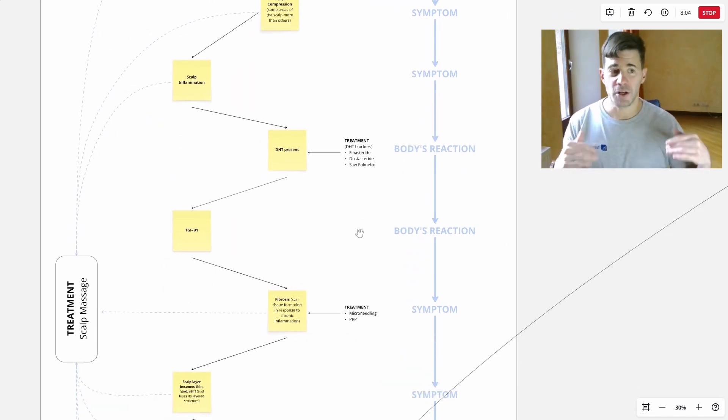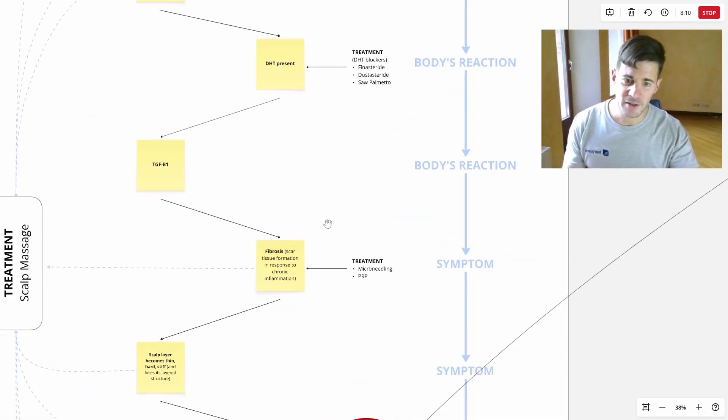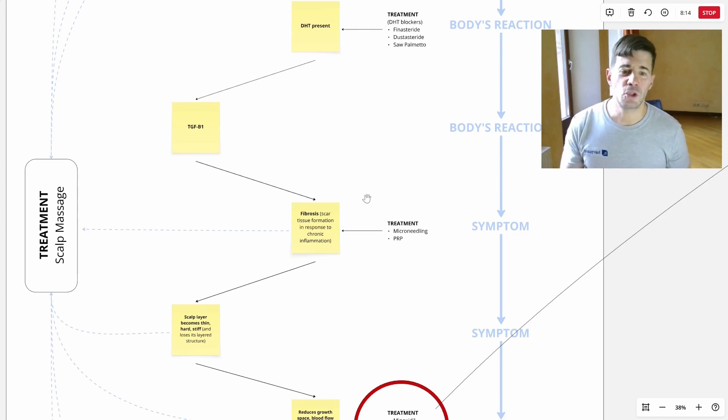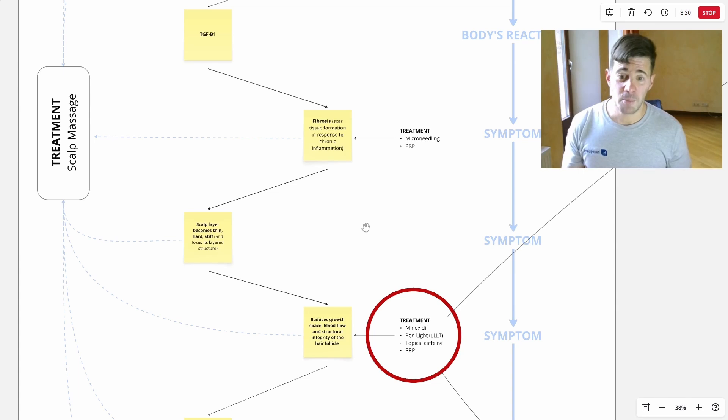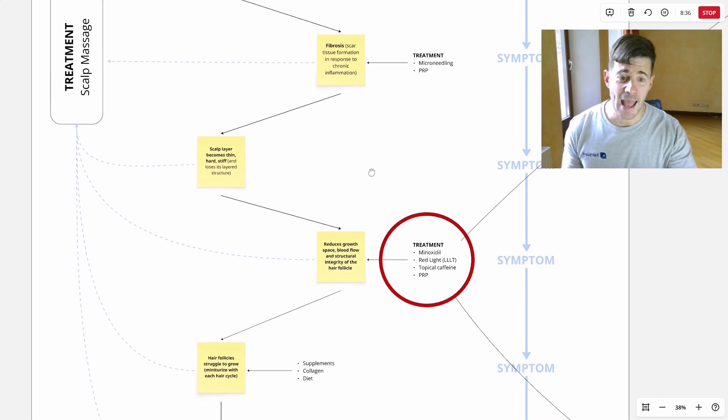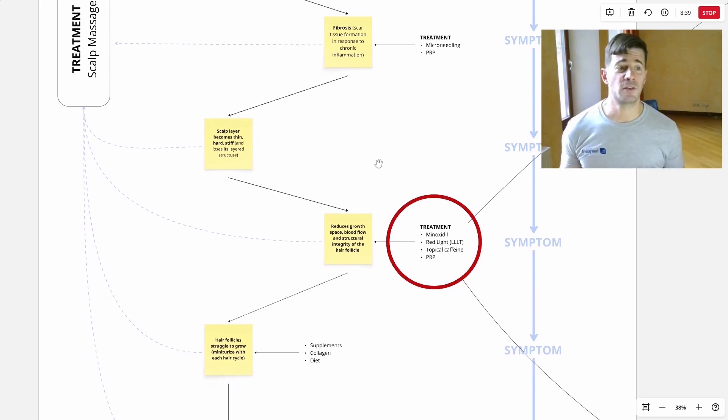And this inflammation in turn triggers, activates, hyperactivates the DHT. Then the DHT triggers another protein called transforming growth factor beta-1. And the DHT working with this protein, they induce what's called fibrosis. By fibrosis, we mean microscopic scar tissue, literally excess collagen that hardens up, just like visible scar tissue. And this happens in the scalp at a microscopic scale. The result is that the scalp becomes thin, hard, and stiff, and it loses its natural structure.